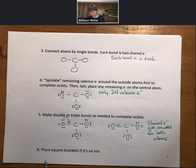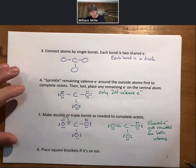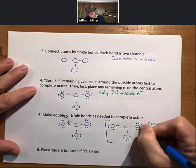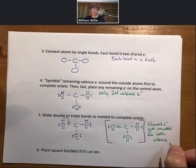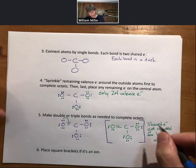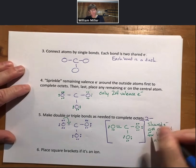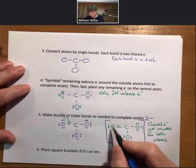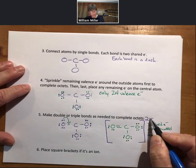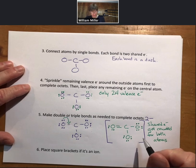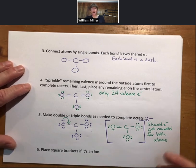Since this is an ion, we do have to do step six. It says place square brackets if it's an ion. Square brackets look like the same kind of brackets that you would use for molarity concentration, and two minus up here. In square brackets, this Lewis structure with the two minus is our final answer.